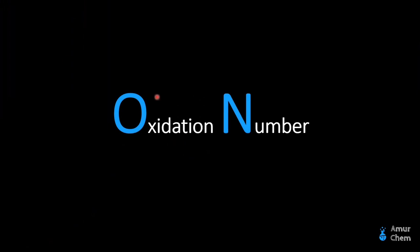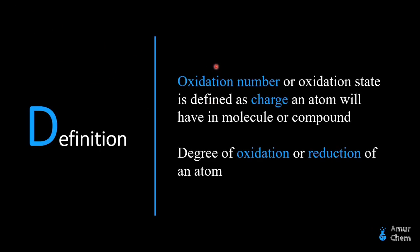First of all, we will go through the definition of oxidation number or oxidation state. Oxidation state or oxidation number is defined as the charge an atom will have in a molecule or in a compound. Oxidation state is actually the number of electrons that an atom will gain or lose in order to form a chemical bond with some other atom.